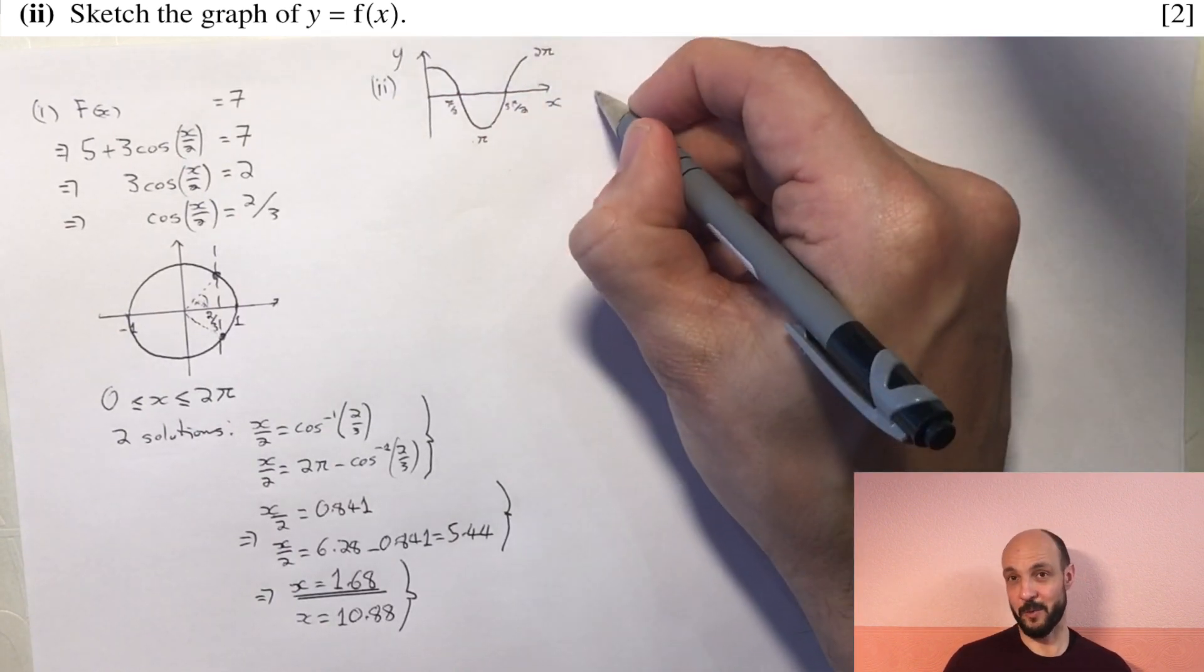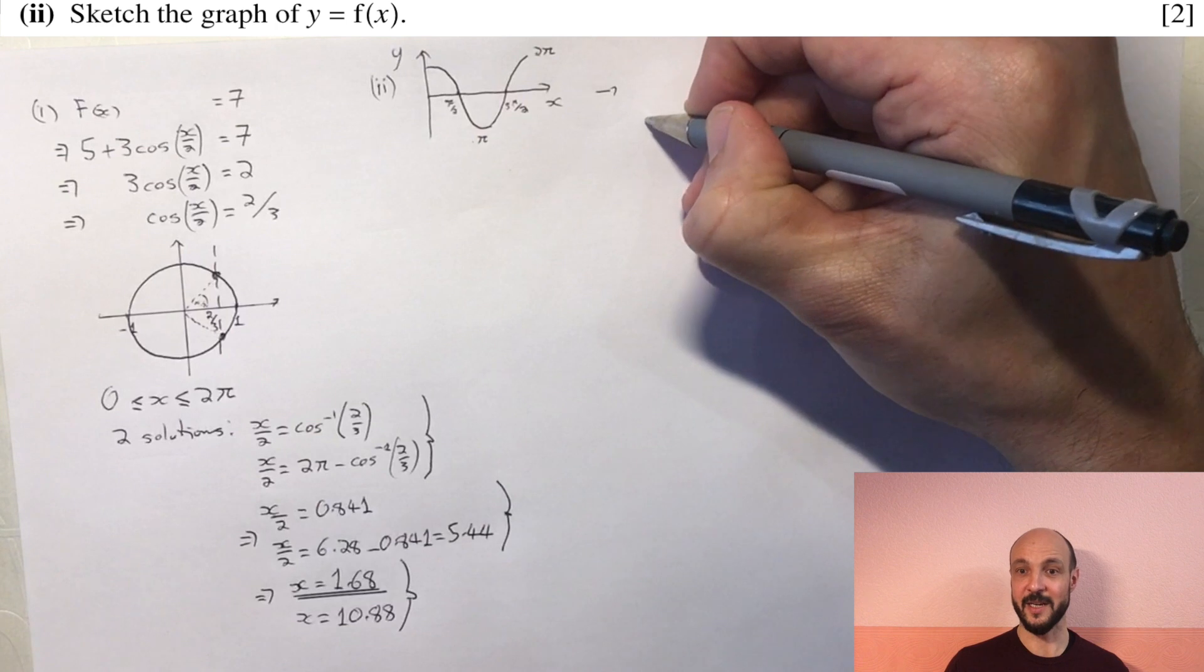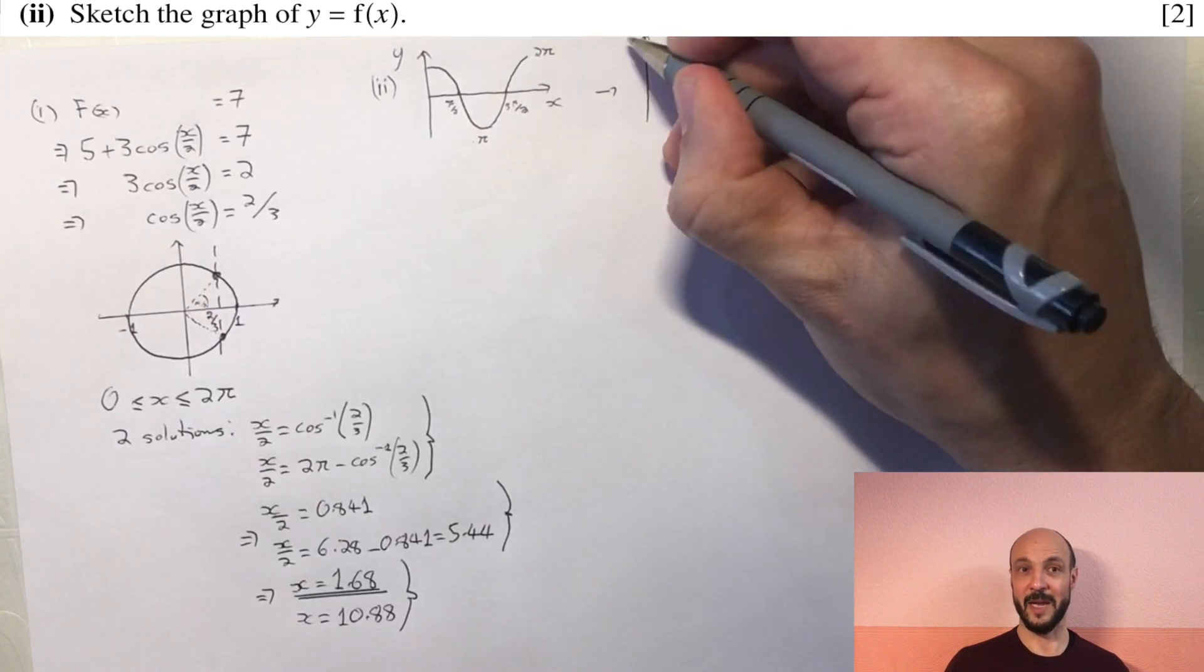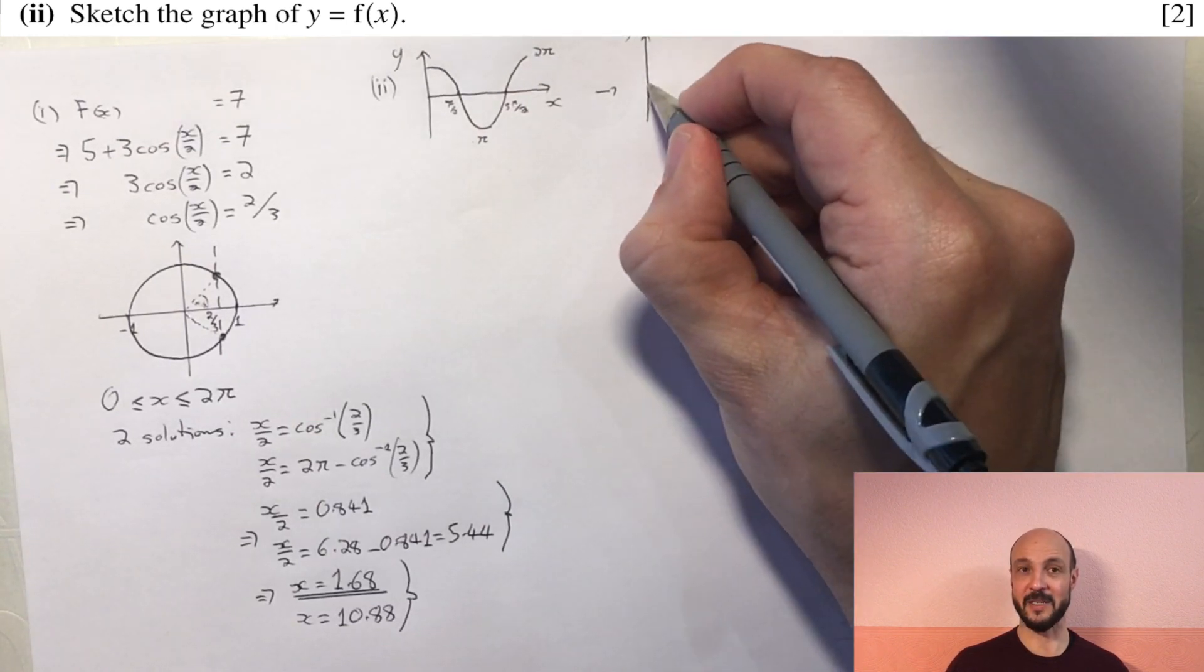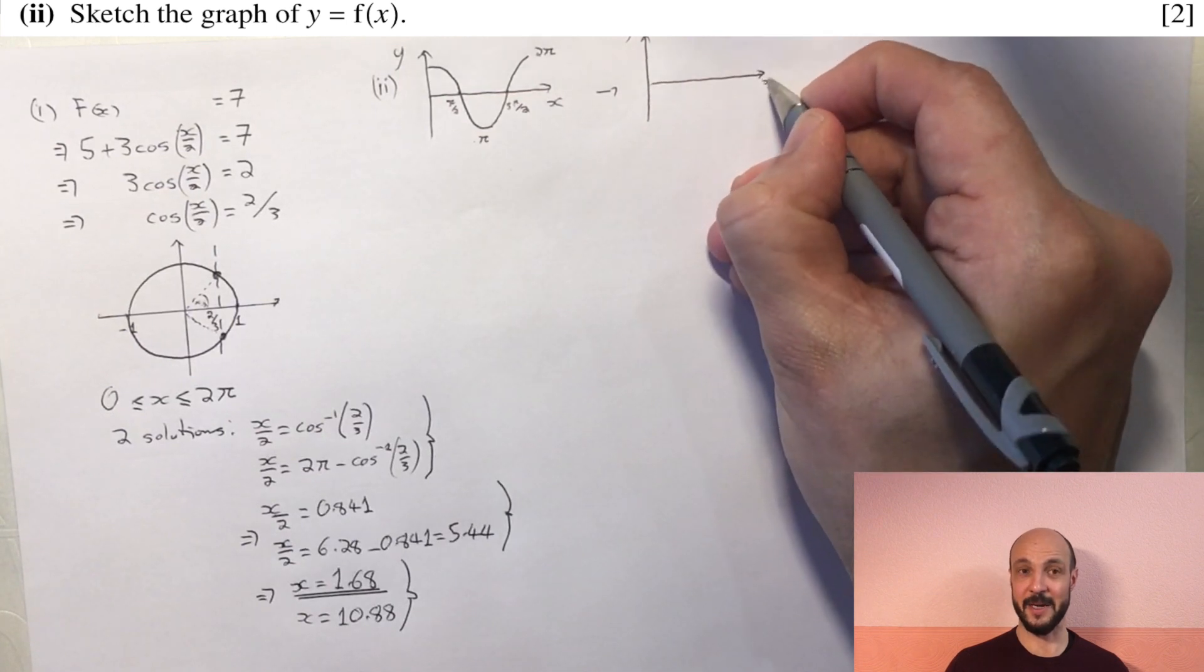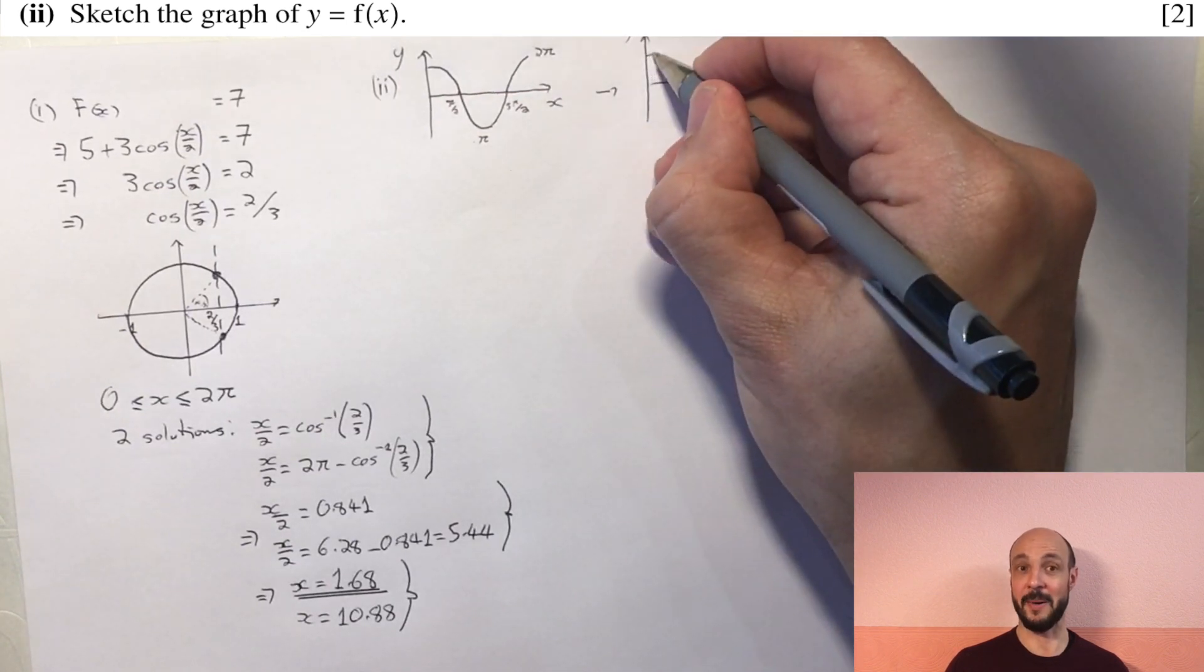Now a compression by a half is equivalent of saying we're stretching by 2, so what we actually do is we stretch the graph by 2 so instead of it crossing the x-axis at π over 2, it crosses at π.